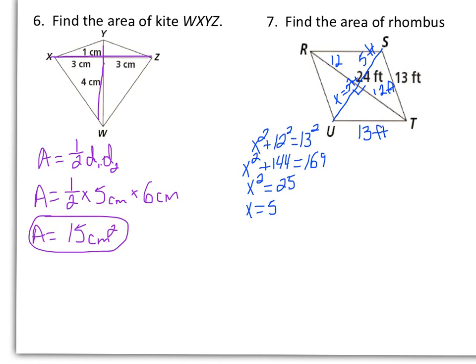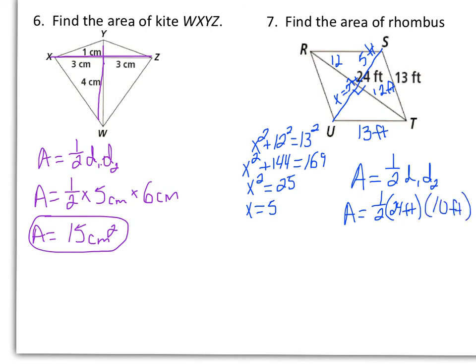Now let's find the area of the rhombus. The formula is the same as the kite: area equals one-half times diagonal 1 times diagonal 2. Area equals one-half times 24 feet times 10 feet. We were given 24, and we found each half of the other diagonal was 5 feet, making the whole diagonal SU equal to 10 feet. Multiplying straight across, area equals 120 feet squared.